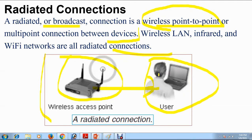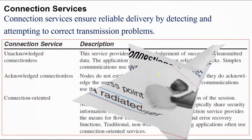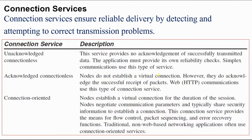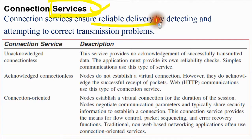Next is connection services. For the N+ certification, these are very important topics and you will definitely get a couple of questions on them. Connection services ensure reliable delivery by detecting and attempting to correct transmission problems. It is basically a service — something doing something for someone else. The main role of a connection service is to ensure reliable delivery by detecting and attempting to correct transmission problems during communication.